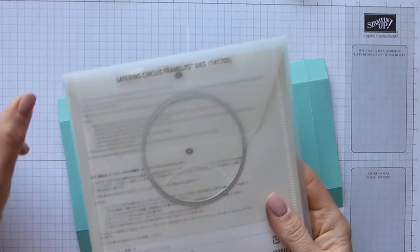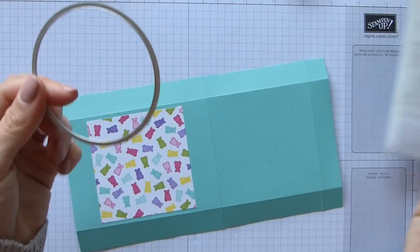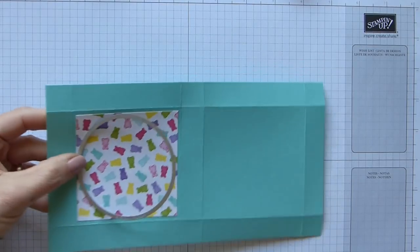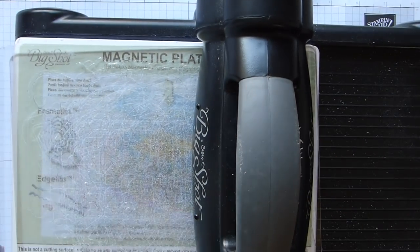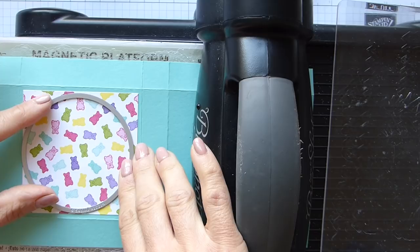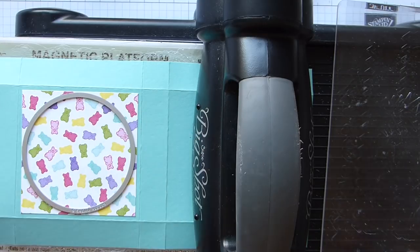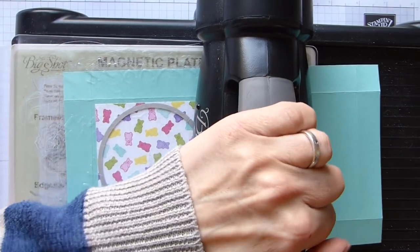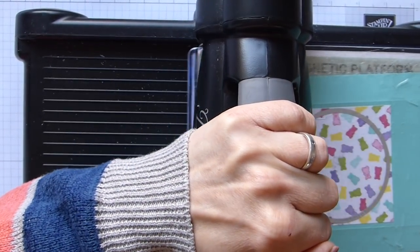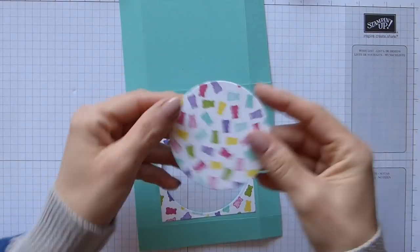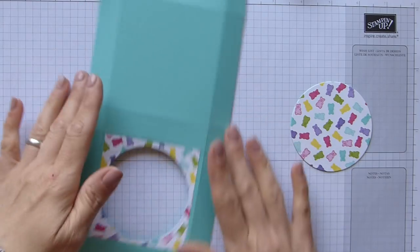Then I'm bringing in my layering circle framelits and I'm using the largest of the circles. This is going to sit just inside the DSP and cut that circle out. So bringing in my big shot, just slide that in there, line up my framelit to make sure it's sat in the centre, pop my sandwich on top, and then we're just going to run this through.